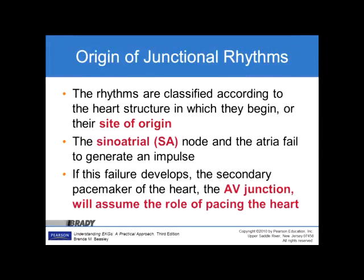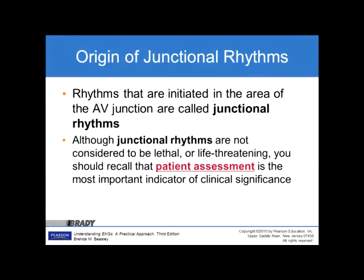Rhythms are classified according to the heart structure in which they begin, or their site of origin. If the sinoatrial node and the atria fail to generate an impulse, the secondary pacemaker site — the AV junction — will assume the role of pacing the heart. Rhythms initiated in the AV junction are called junctional rhythms. Although not life-threatening, patient assessment remains the most important indicator of clinical significance. If the heart rate is very slow and running at the junction, you may need to treat the patient as if they were in a bradycardic rhythm.